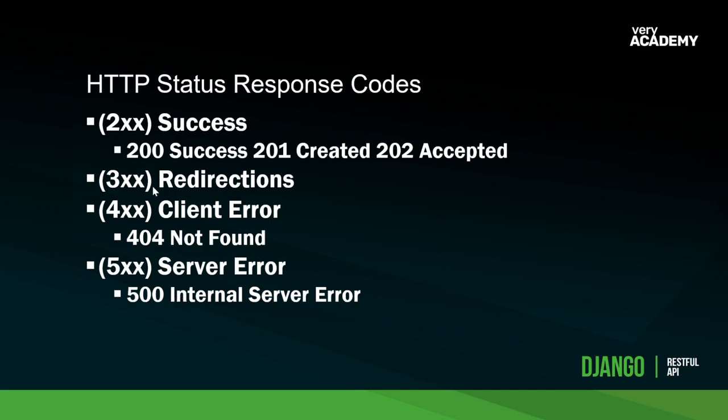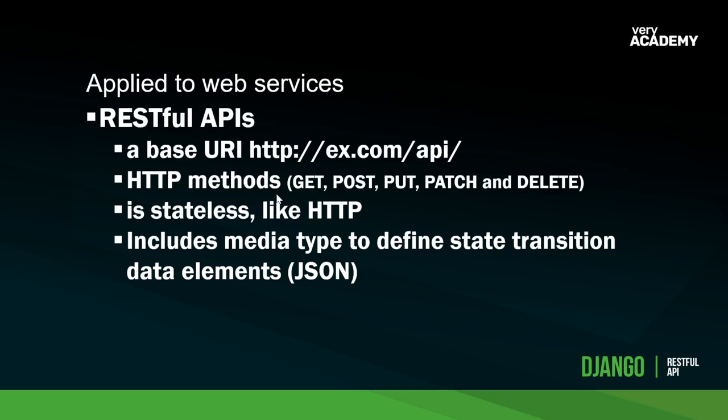I'll point out these response codes as we go and we'll need to understand them to debug and test our code. For a RESTful API to be classified as such, it must meet certain conditions. It must have a base URI — a point of entry into the system, for example: http://x.com/api. We use links like this to direct users to data.